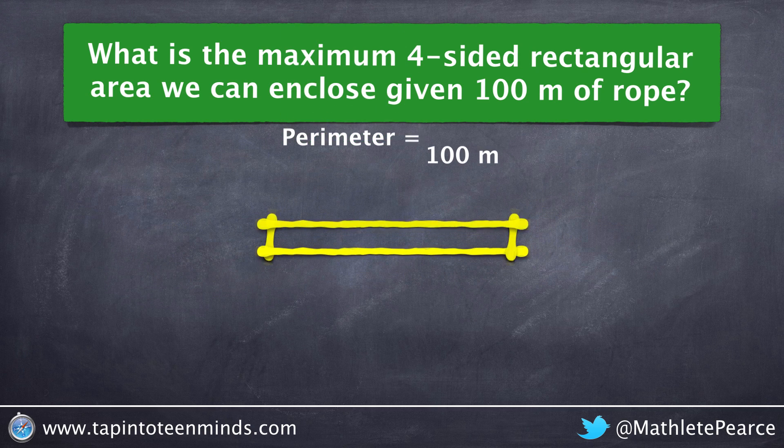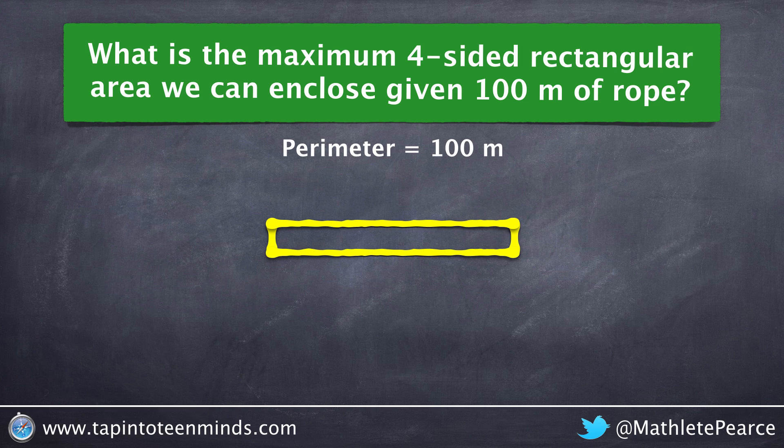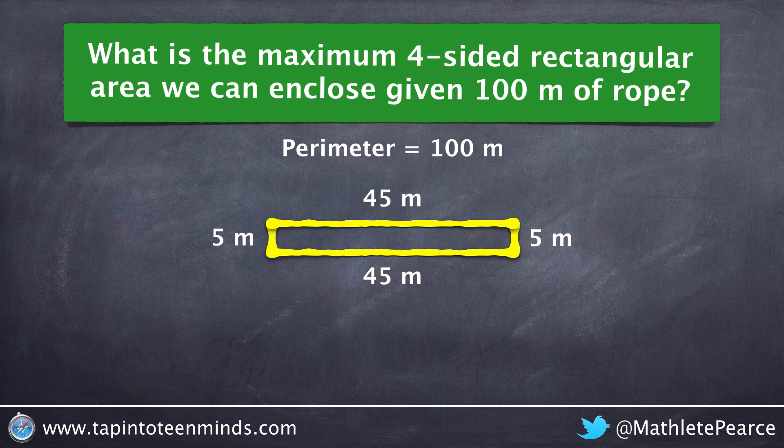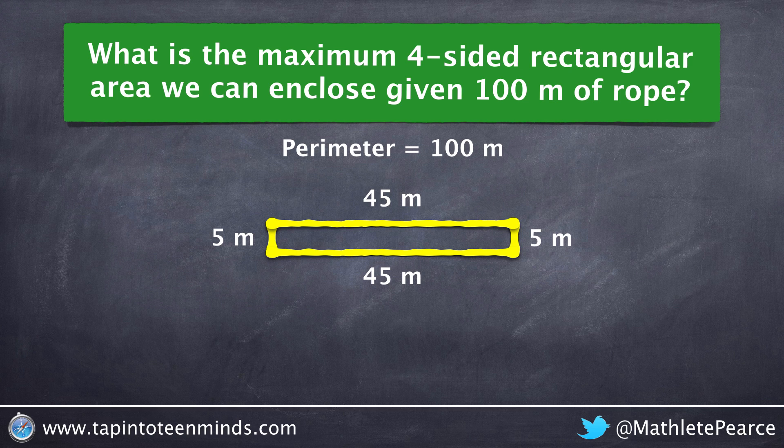If we give our enclosure a very short width, we will get a very narrow area. For example, if we use a width of 5 meters, we'll also need to use another 5 meters on the opposite side to take care of that width. That leaves us with 90 meters of rope to work with from the 100. Dividing that amongst the two lengths, we end up with a 45 meter length.